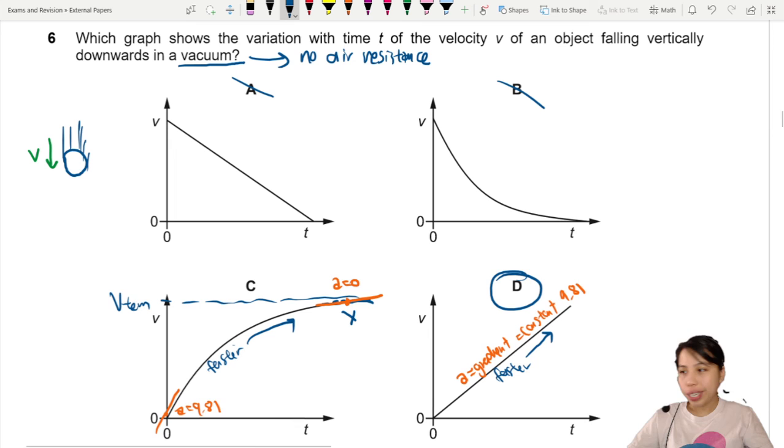If you want to know an equation to confirm this graph, you think of how you can relate V and T in one equation. Turns out it's a SUVAT equation. Remember this one? V equals U plus AT.